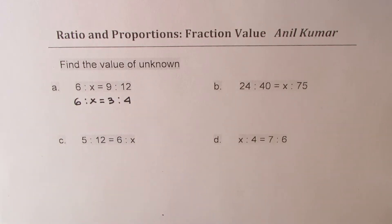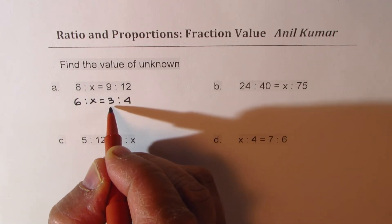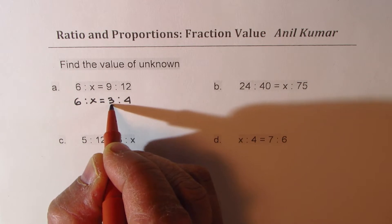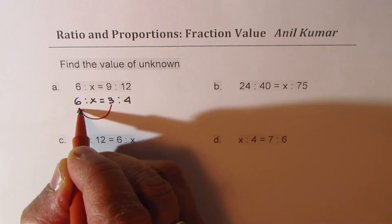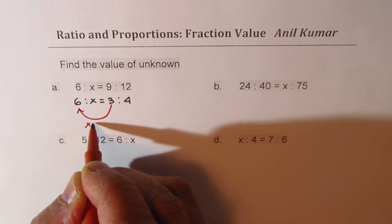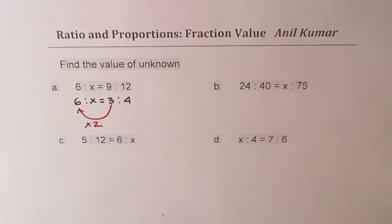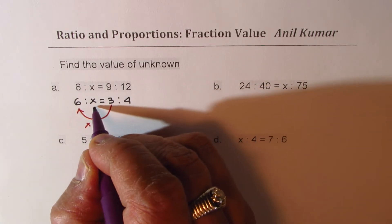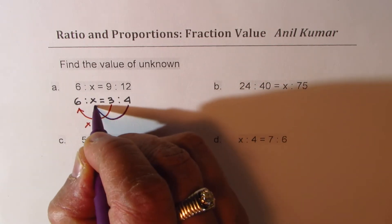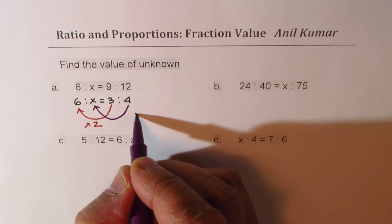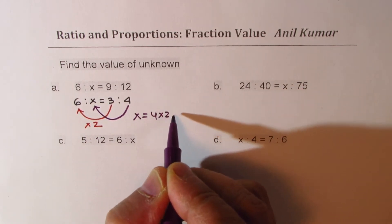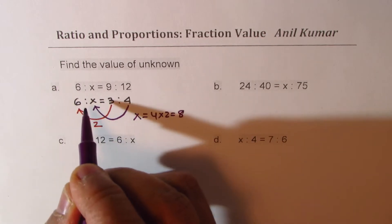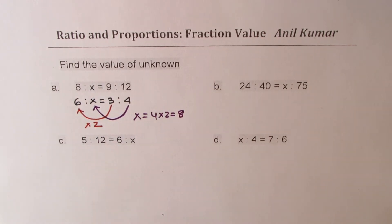And now we see that from 3 we get 6 if I times it by 2. So we get 6 and therefore getting x is very simple. I have to multiply 4 by 2 to get x. So therefore we get x equals to 4 times 2 which is 8. So we get x as 8 in this particular case.